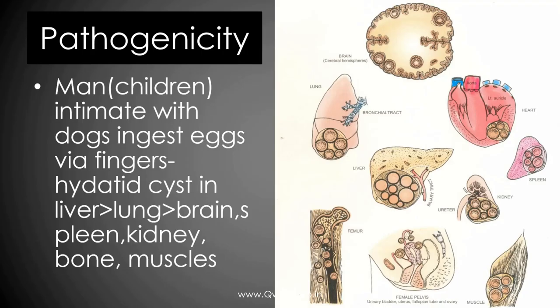Pathogenicity in humans: you can see the hydatid cyst. Liver and lung are the commonly affected sites, followed by brain and kidney — basically any organ with a rich blood supply.